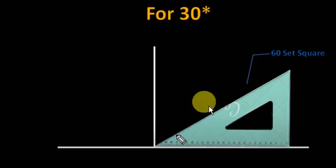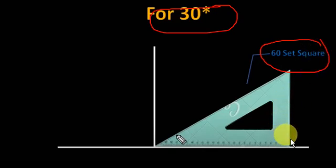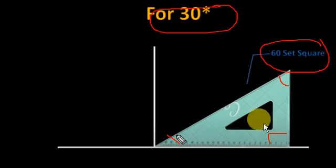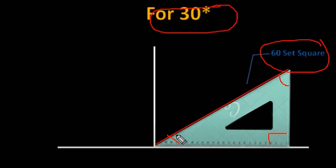Now let us see how to construct an angle of 30 degrees. To construct an angle of 30 degrees, you have to choose the 60-degree set square. In the 60-degree set square, here it is 60 degrees, then 90 degrees, and this is 30 degrees. You have to draw a line from here to here — this area is a 30-degree angle. No need to join two set squares; you can construct 30 degrees easily with just the 60-degree set square.